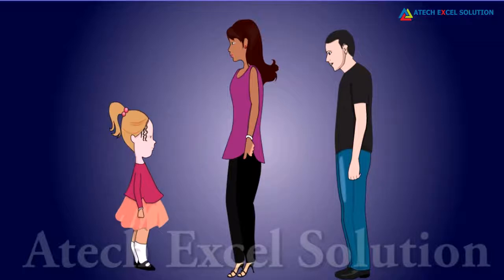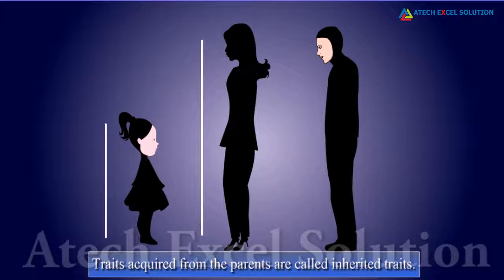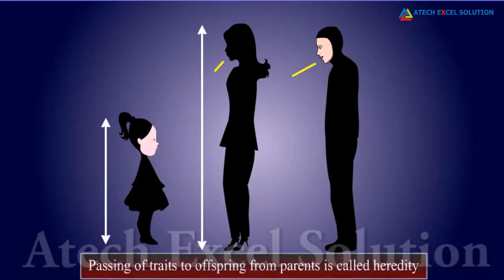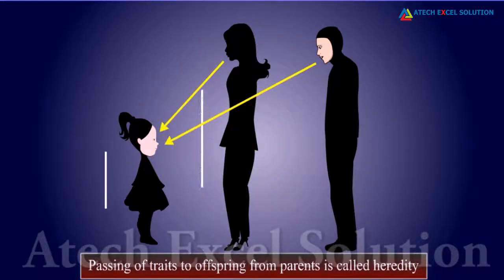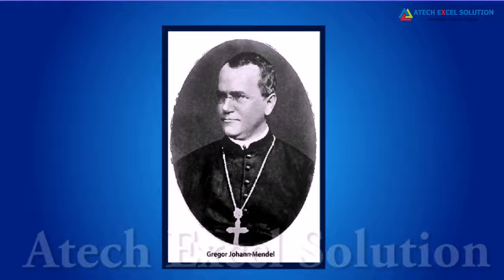Offspring have characteristics acquired from the parents. These characteristics are called traits. The baby gets the fair skin from his father and the height from his mother. Since these traits are acquired from the parents, they are called inherited traits. Passing of traits to offspring from parents is called heredity.